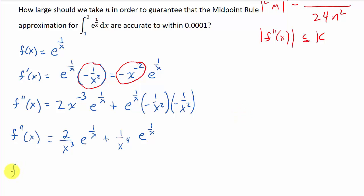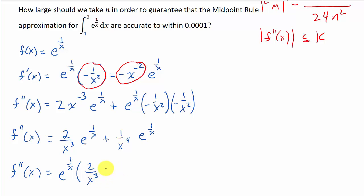I'm going to factor out e^(1/x), so f''(x) = e^(1/x) · (2/x³ + 1/x⁴). A lot of times when you have e to a power as a common factor, it's good to factor it out — it just makes it easier to look at. Now we've got the second derivative, so we need to figure out what K is.